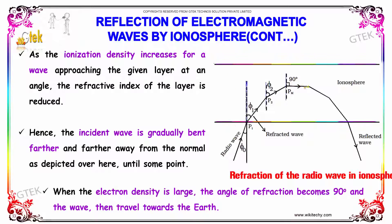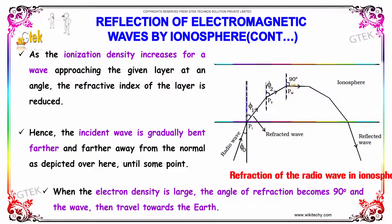When the electron density is large, the angle of refraction becomes 90 degrees, and the wave then travels back towards the earth.